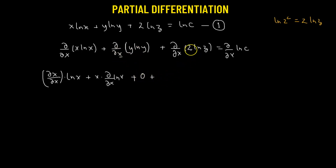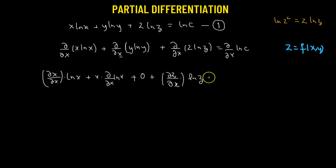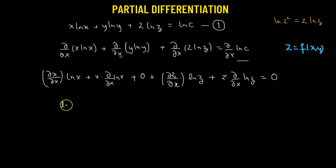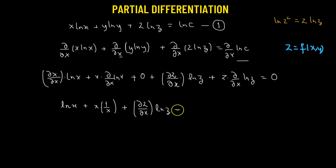Since z is a function of x and y, it cannot be treated as a constant. We apply the product rule to z·log(z) to get ∂z/∂x · log(z) + z · ∂(log z)/∂x. The right-hand side, log(c), is a constant so its derivative is zero. Using the chain rule, ∂(log z)/∂x = (1/z) · ∂z/∂x.